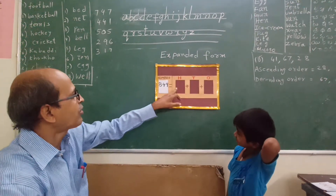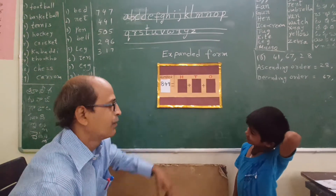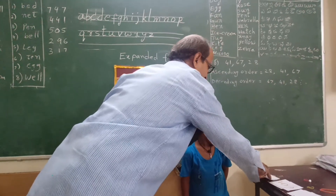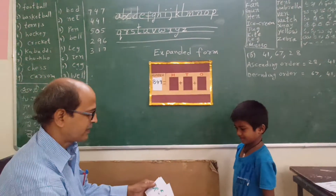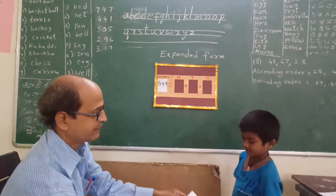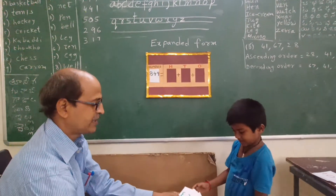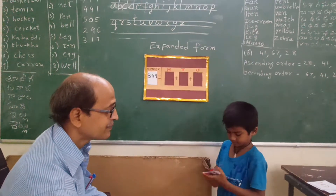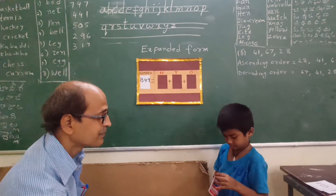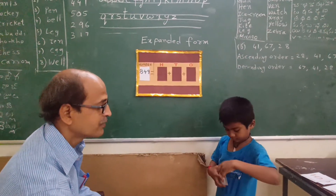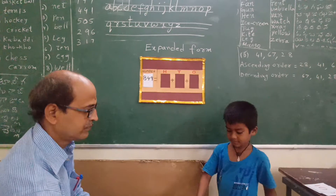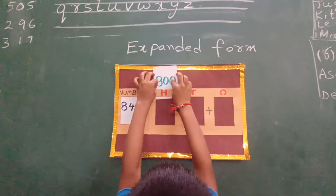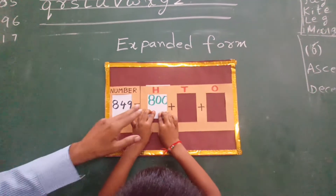And we have to insert the relevant cards for these boxes. Now select 100 cards from this card — select and insert one relevant card. This is 100, 200. You have to take the 800 card. Insert the card in that box. Very good. This is 800.